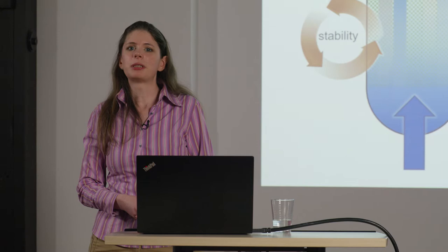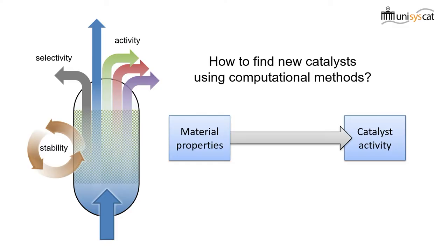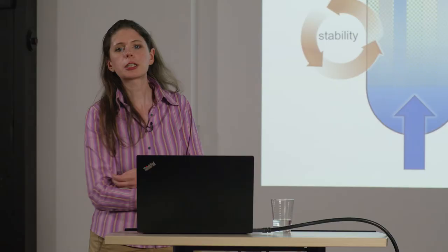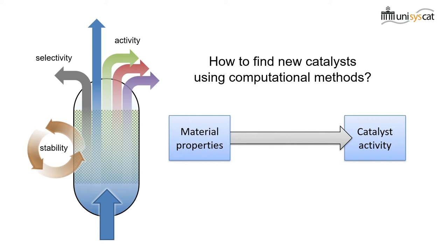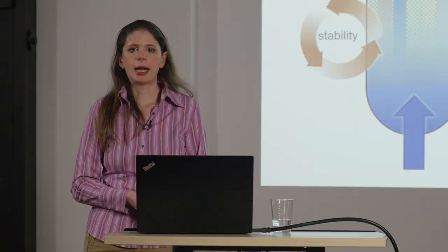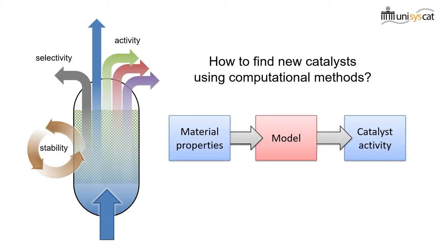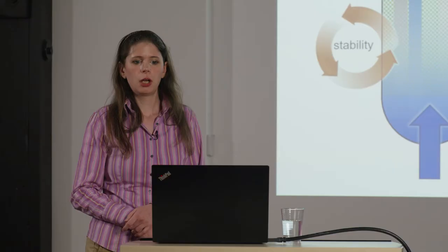If we want to identify new catalyst materials, we need to connect the catalyst activity with fundamental catalyst material properties, as shown here. We have material properties and we want to make deductions about the catalyst activity from these material properties. This connection is usually not immediately obvious, but rather we need a computational model that is able to connect the material properties with the catalyst activity. Such models are usually built based on previous insight using experiments or more detailed computations, or most commonly, a combination of the two.